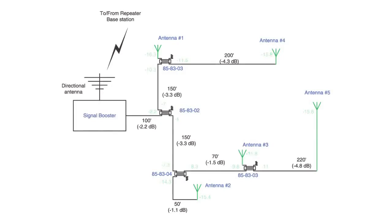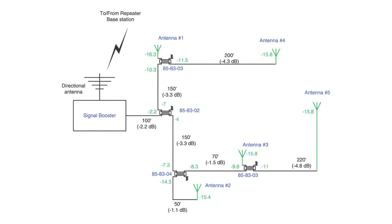Using directional couplers in the same system shown earlier achieves more uniform signal levels at the antennas. All the signal levels are within 1 dB of each other, and we don't incur the added cost of an inline booster, because the loss of 15.8 dB at antenna number 5 is far better than our threshold of 25 to 30 dB.